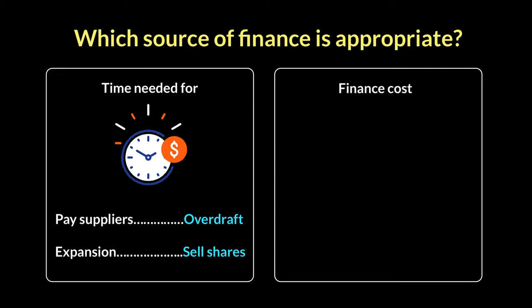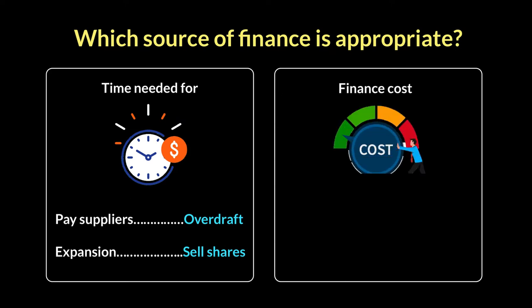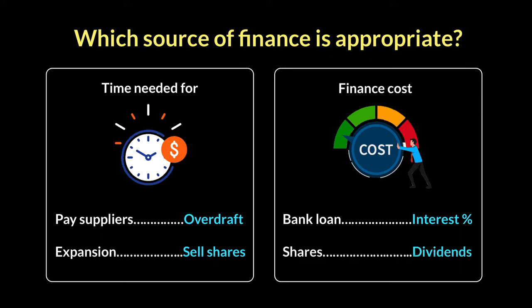Secondly, you should look at the cost of each source. When you take loans, for example, you have to pay an interest percentage on top of that. If you sell shares, you have to pay dividends. So different costs apply — something is coming out of the pocket of the business and going into the pockets of the bank or the investors. You need to compare one with the other and see which one is going to be cheaper. If it costs you less, that's a more desirable source of finance.